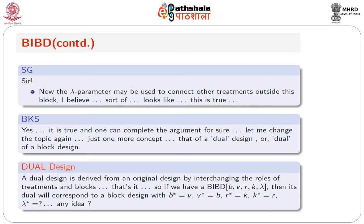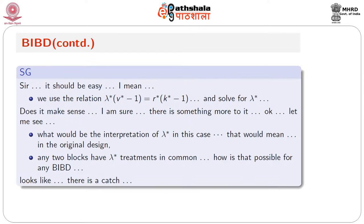Now what is lambda*? One can use the relation lambda* × (v* - 1) = r* × (k* - 1) to solve for lambda*. The interpretation of lambda* would be that in the original design any two blocks have lambda* treatments in common. If the BIBD to start with is a symmetric BIBD — meaning v = b and r = k — then its dual is also a BIBD with the same set of parameters, and hence lambda* = lambda with the usual interpretation.